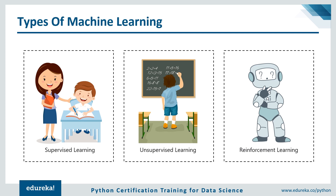Next, we have unsupervised learning. Unsupervised means to act without anyone's supervision or direction. Here the data is not labeled, there is no guide, and the machine has to figure out the dataset given and find hidden patterns in order to make predictions about the output. An example of unsupervised learning is an adult like you and me — we don't need a guide to help us with our daily activities and we can figure things out on our own without any supervision.